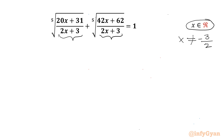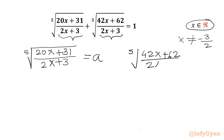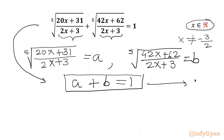I will use substitution straight away. I will call the 5th root of (20x + 31)/(2x + 3) equal to a, and the 5th root of (42x + 62)/(2x + 3) equal to b. So our equation becomes a + b = 1. We will call this equation 1.